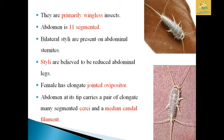They are said to be primitive insects and the abdomen is classified into 11 segments. They have styli present on the abdominal segments, which are believed to be reduced abdominal legs. The female has an elongated jointed ovipositor. The abdomen at the tip carries elongated paired segmented cerci.